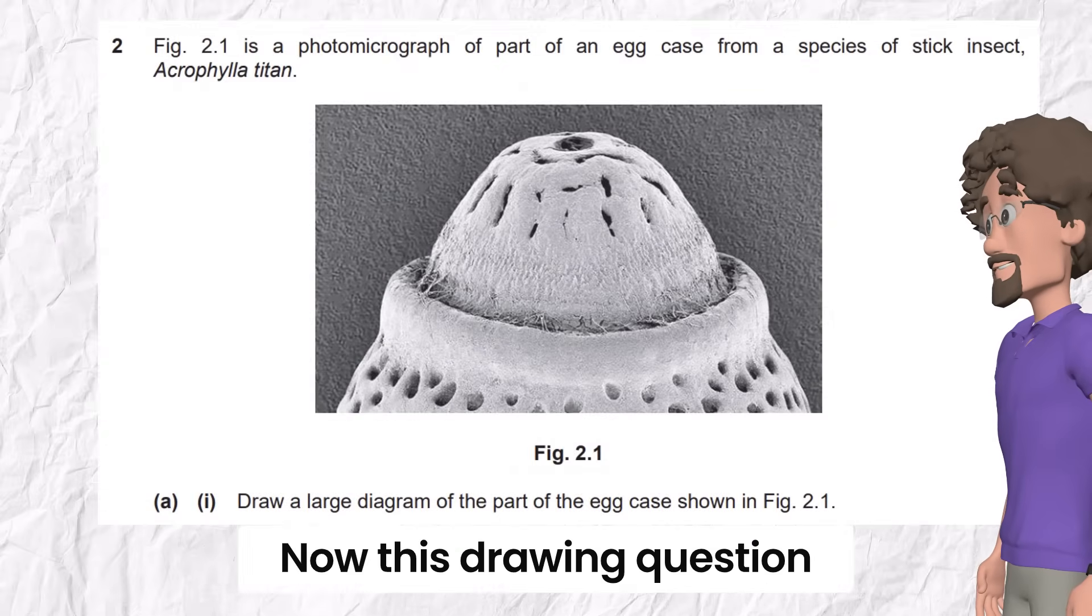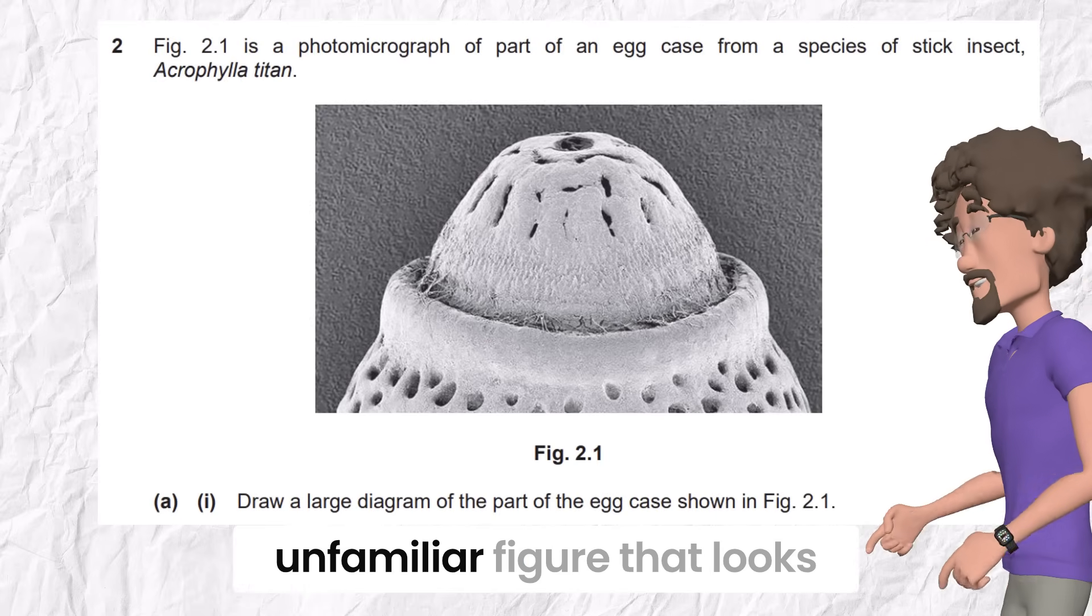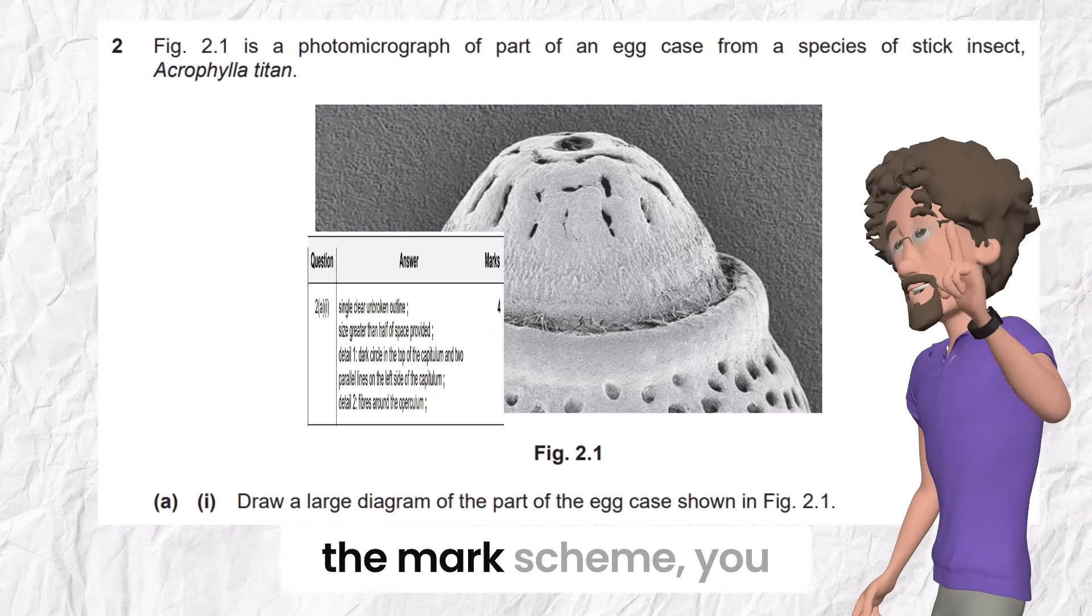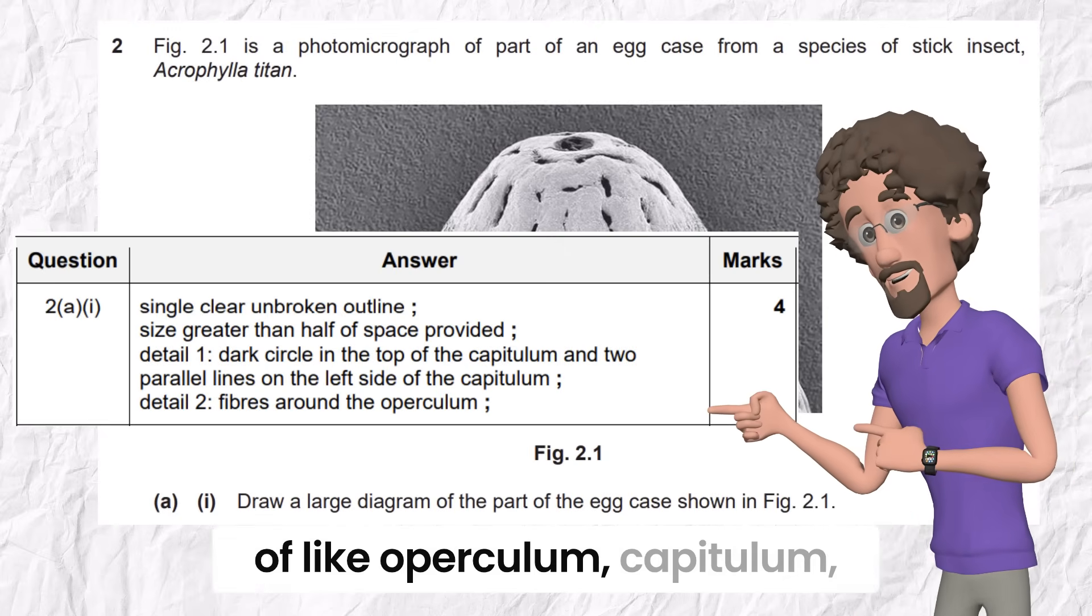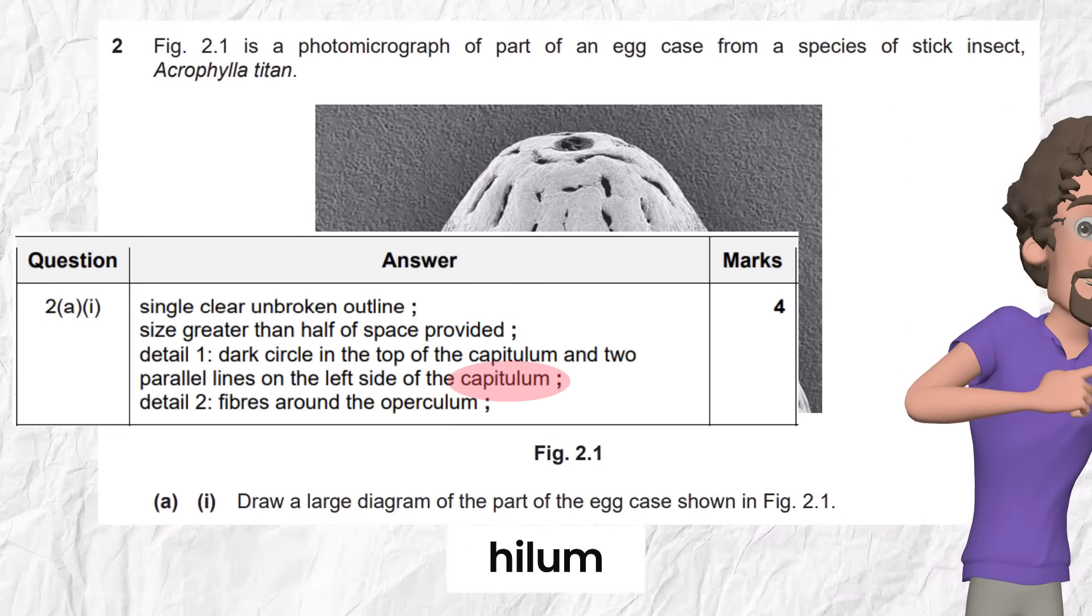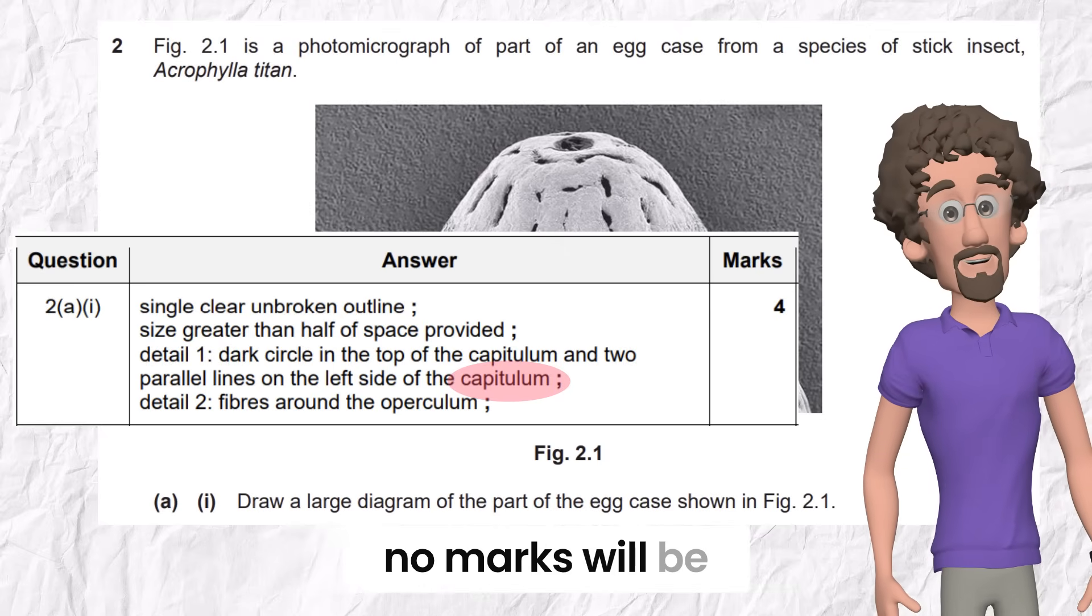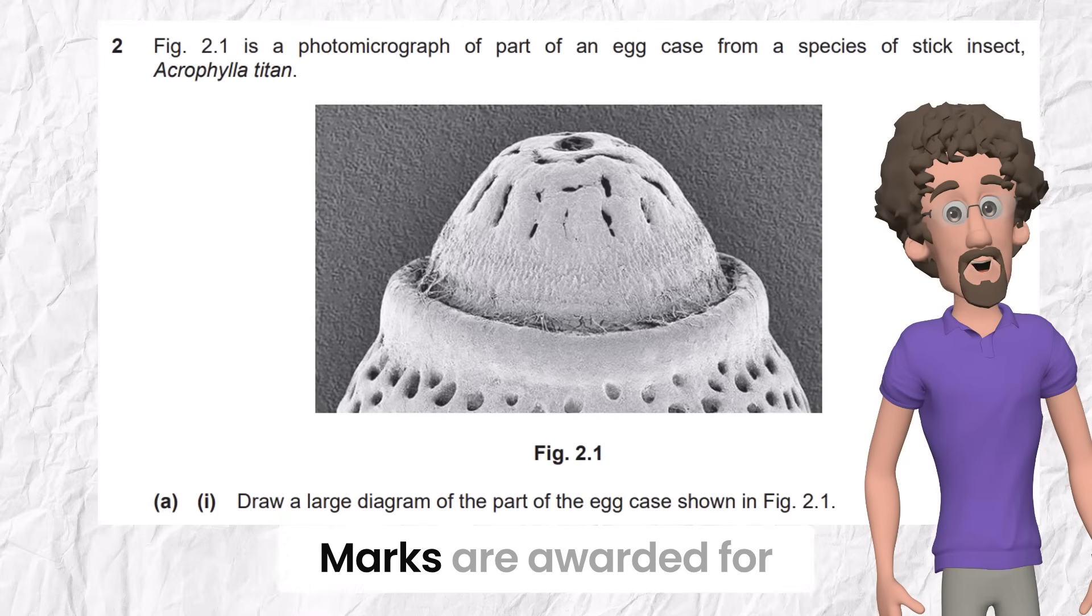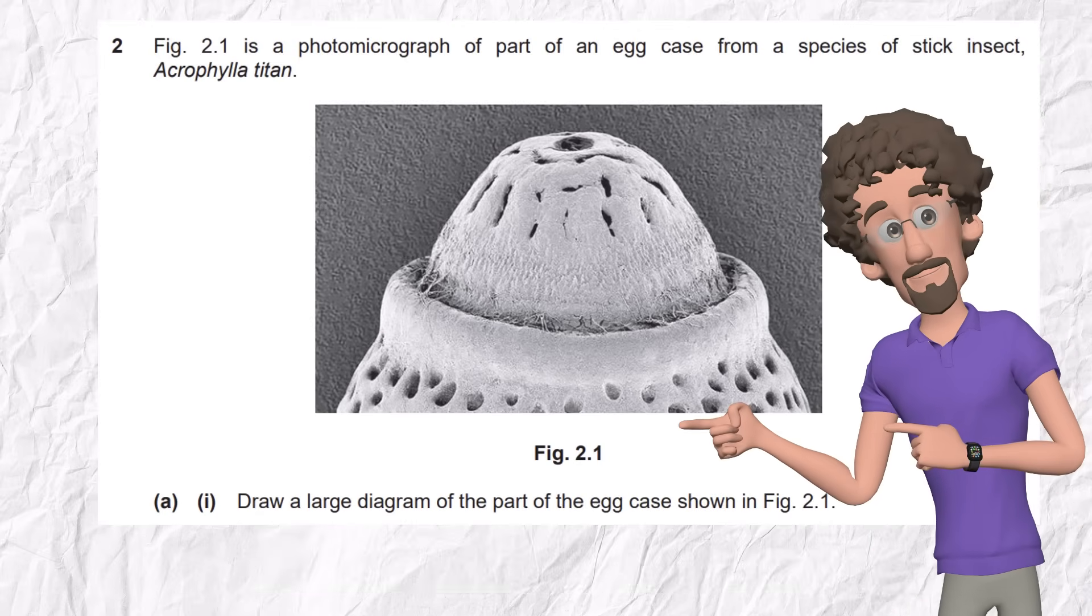Now this drawing question of the egg case of one insect. This is a perfect example of facing an unfamiliar figure that looks complex from the first view. And if you see the mark scheme, you may panic, because you will see biological terms that you never heard of like operculum, capitulum, hilum. Okay, but the question never asks you to use those terms, and no marks will be added if you know them. The mark scheme uses those terms for examiner reference, not for student recall. Marks are awarded for drawing the correct part, even if you don't know what it's called. So calm down.